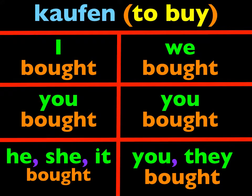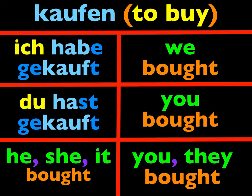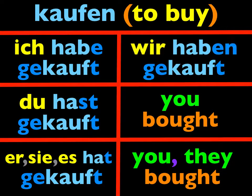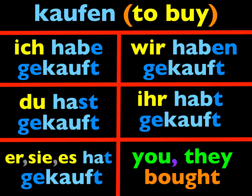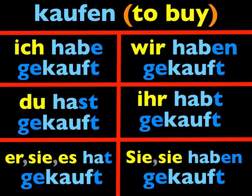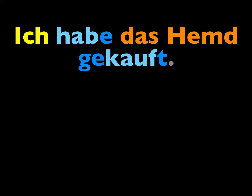Now we learned that the past tense of kaufen is: ich habe gekauft, du hast gekauft, er hat gekauft, wir haben gekauft, ihr habt gekauft, und sie haben gekauft. Kaufen is a weak verb — its past participle ends in the letter T, which shows you that it's a weak verb. Most verbs take haben as the helping verb to make this past tense. Ich habe das Hemd gekauft — I bought the shirt.